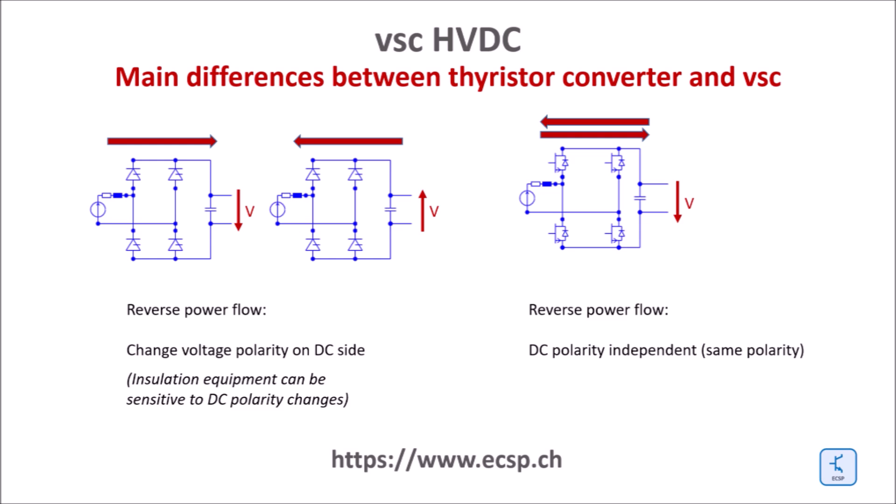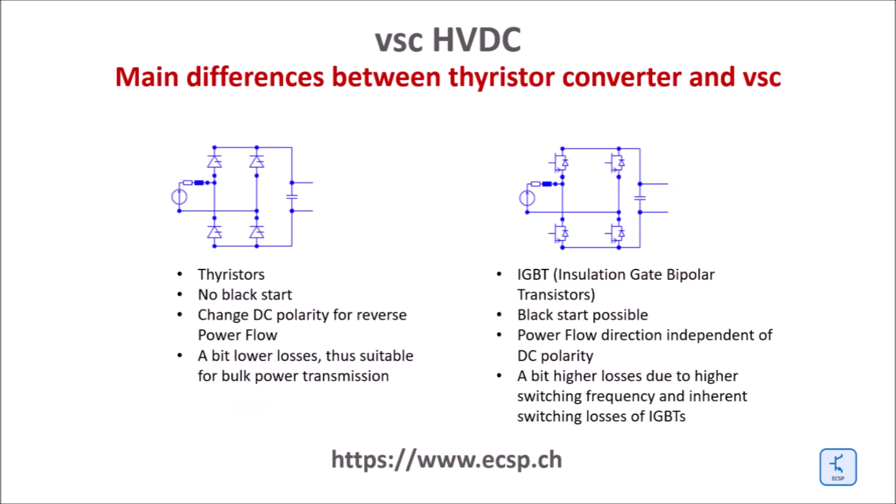This results in a more flexible solution. Here is a summary of the main differences: the switches of thyristor converters are thyristors; for VSCs we need IGBTs — these are high power transistors, controlled resistances that can interrupt the current. VSCs can drive passive loads; the benefit for HVDC is that you can perform black starts. The drawback: VSCs have slightly higher losses because of the IGBT switches.